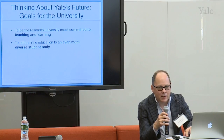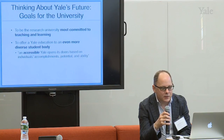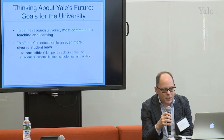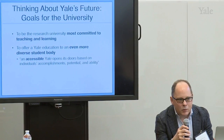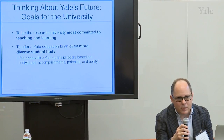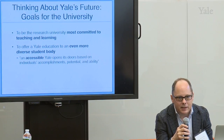When he talks about this second goal, he talks about an accessible Yale that opens its doors based on individuals' accomplishments, potential, and sustainability. What I'd like to ask is: when we think about this goal of diversity and our commitment to diversity, what is it that we think about? Typically, we tend to think diversity means opening the doors to students of racial, ethnic, or socioeconomic groups who have been underrepresented at a place like Yale in the past.